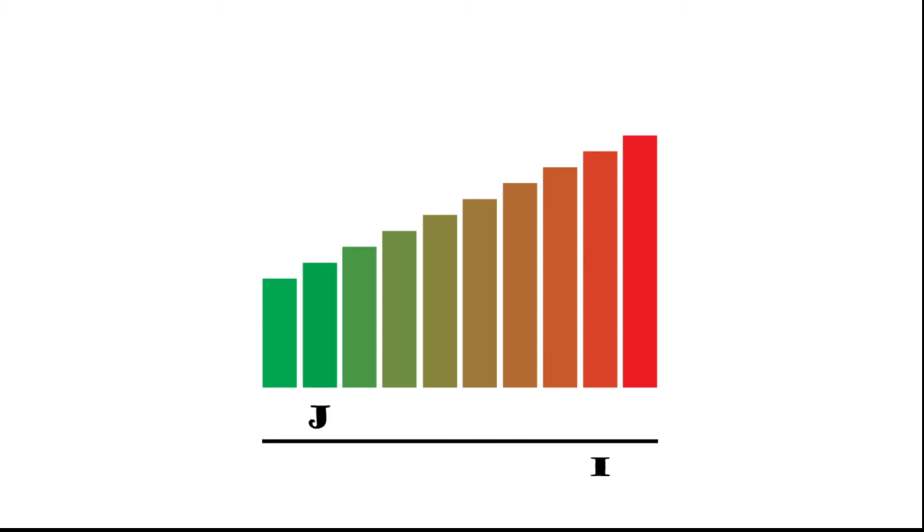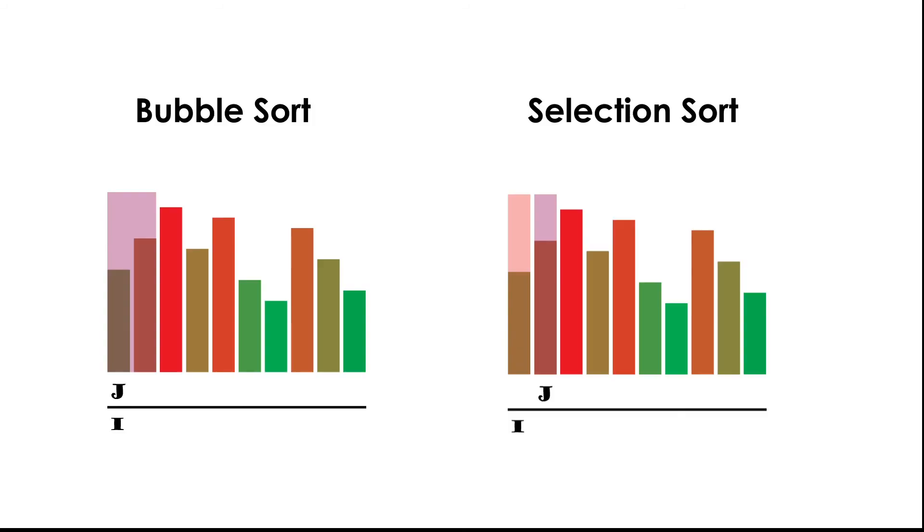Just to give you a different algorithm to compare this to, here's a selection sort. Okay, selection sort works a little bit differently, but it still has a Big O of n², so again it's not the best way, but it is faster.